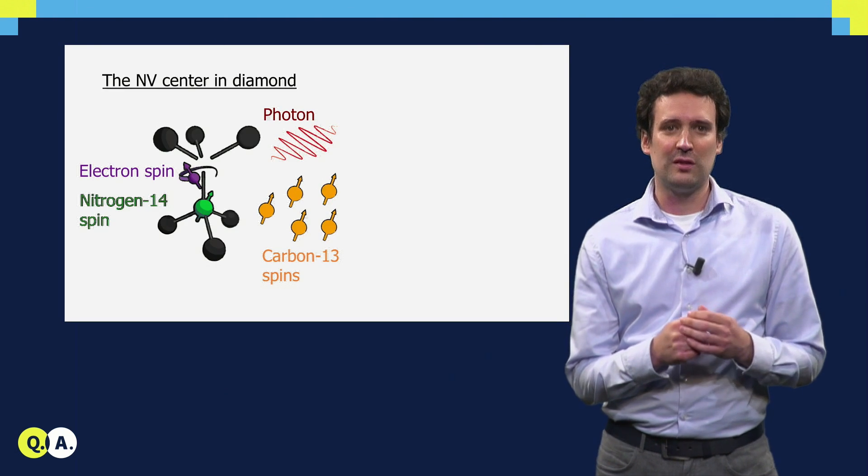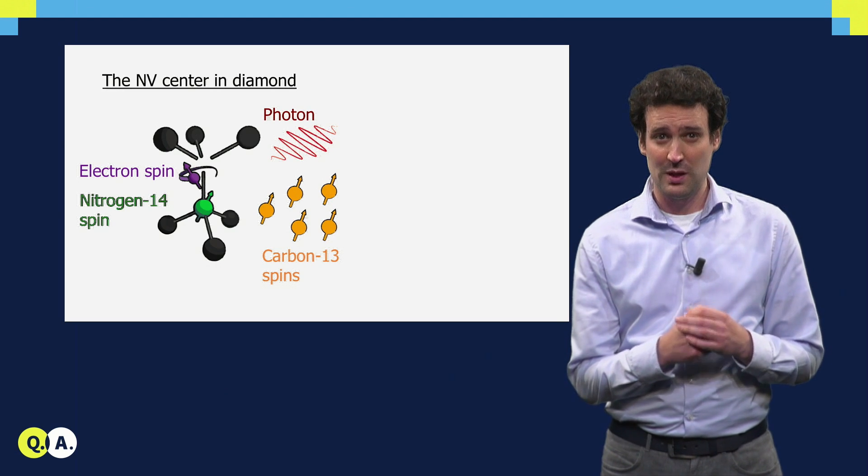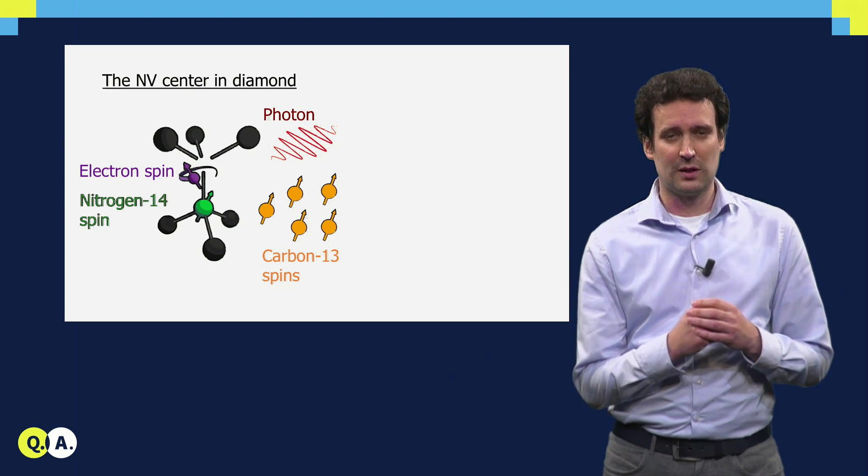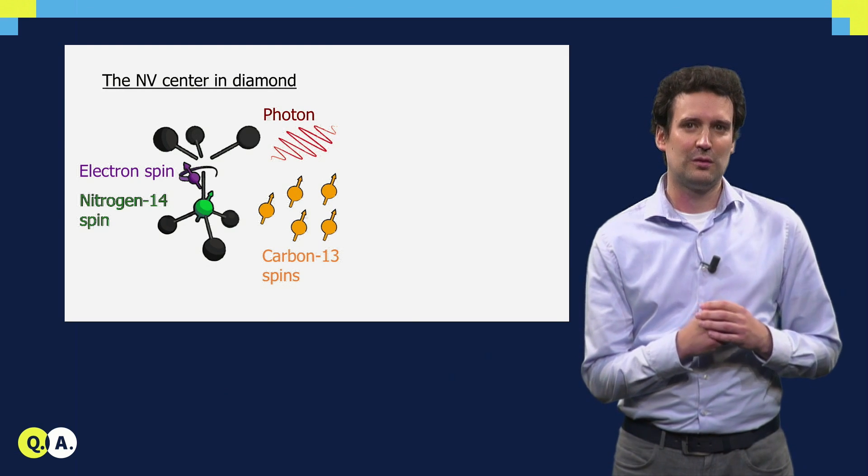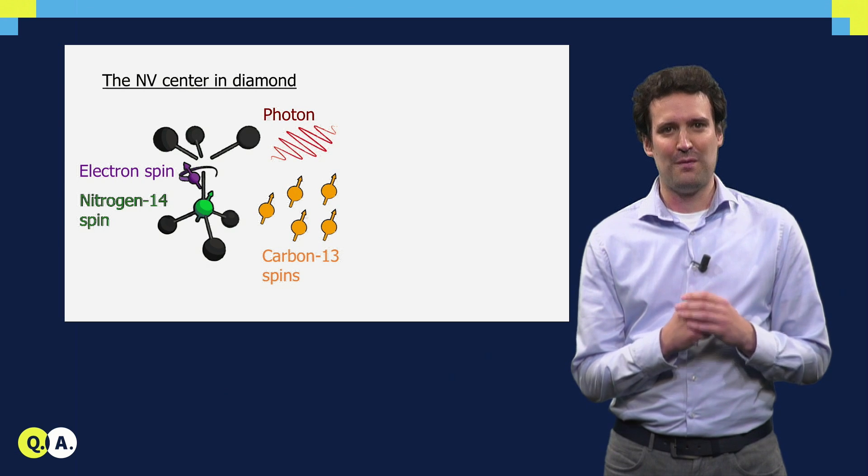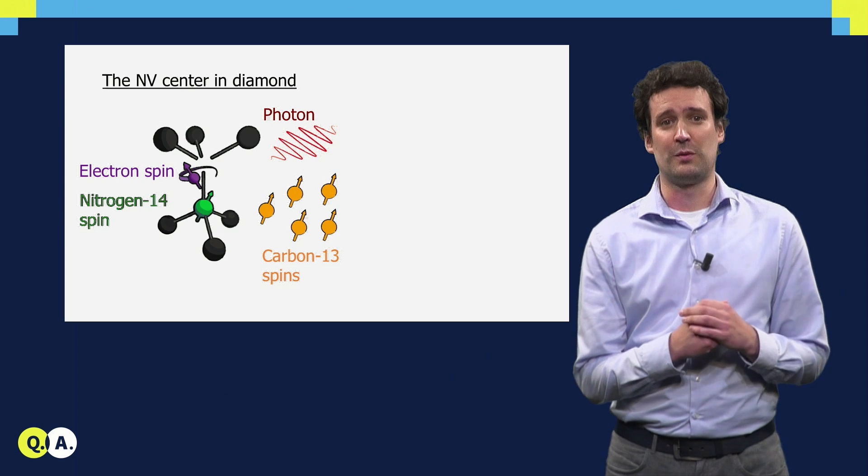This NV center consists of a substitutional nitrogen atom in the diamond lattice next to a missing carbon atom, a vacancy. At this vacancy, some electrons are trapped that form an electron spin that we can use as a quantum bit.